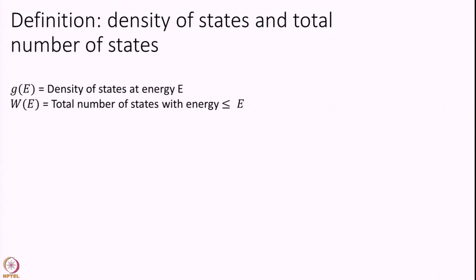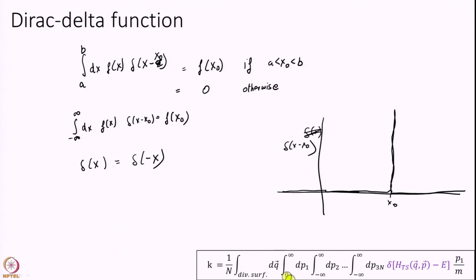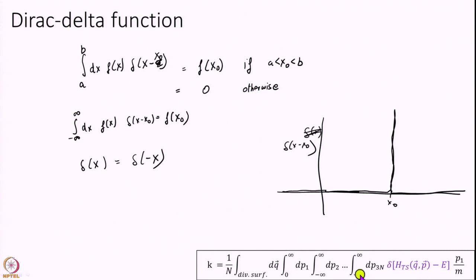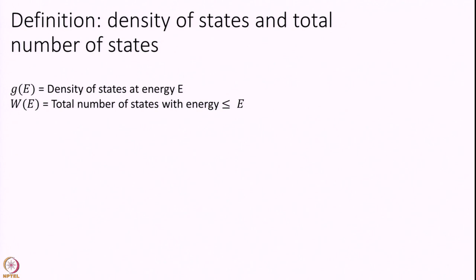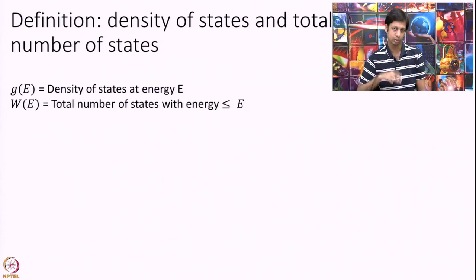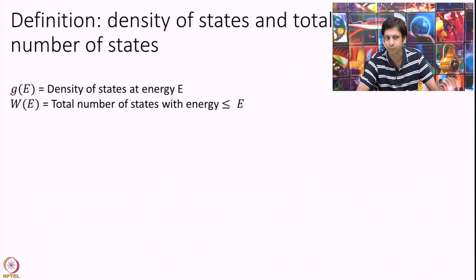This expression at constant energy is actually much harder to evaluate than at constant temperature, because the Dirac delta function couples all the q and p variables through the Hamiltonian H. Earlier, with e^(−H), I could separate out the p₁ term and integrate it separately. So I need to introduce a little more language to simplify this integral.